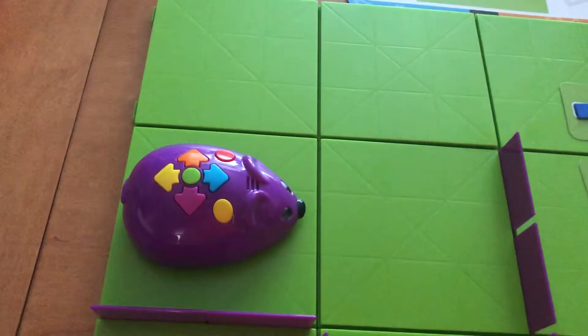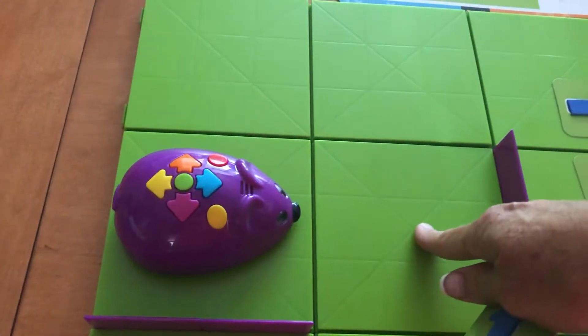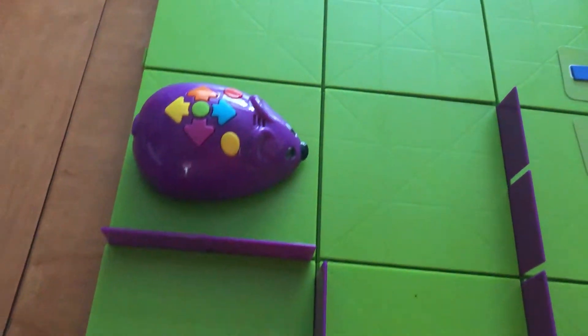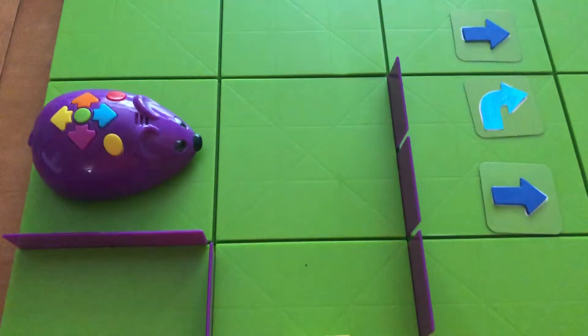So from the position where the mouse is, he's moving forward, so I'm going to use another forward card.